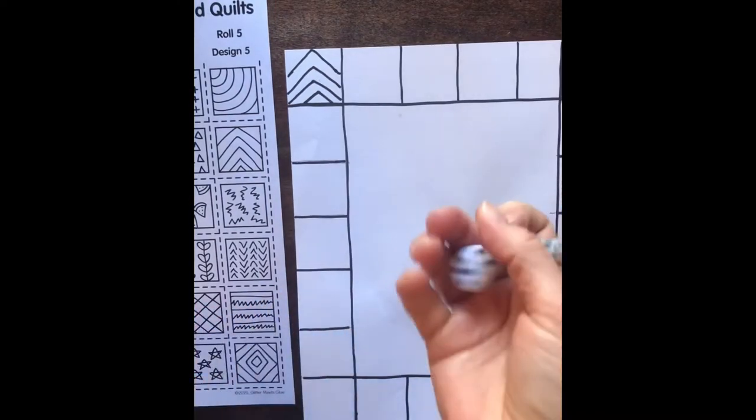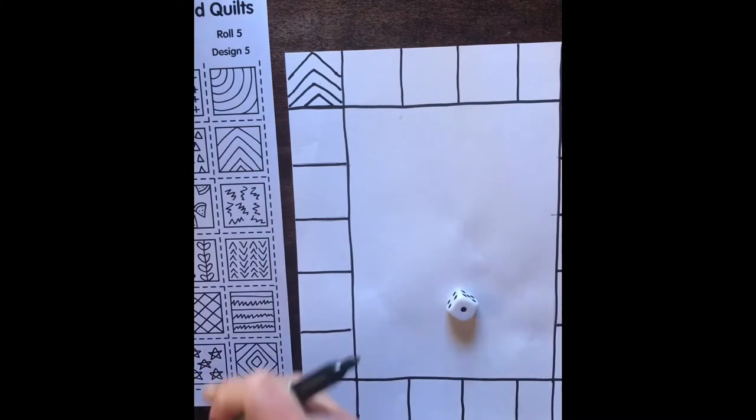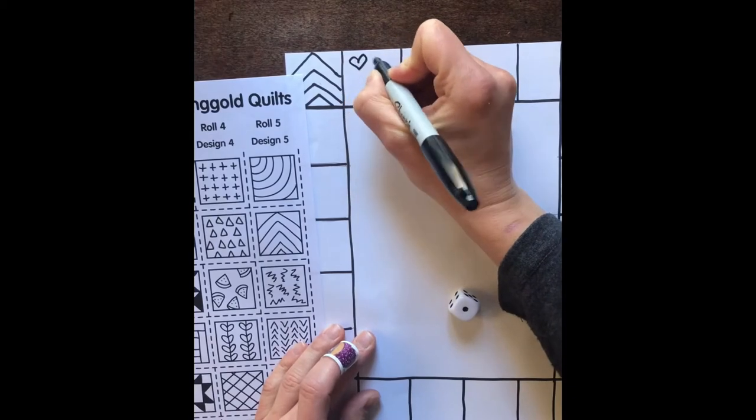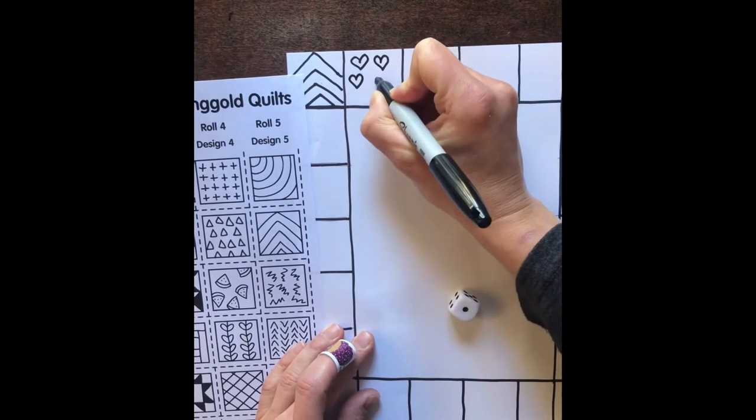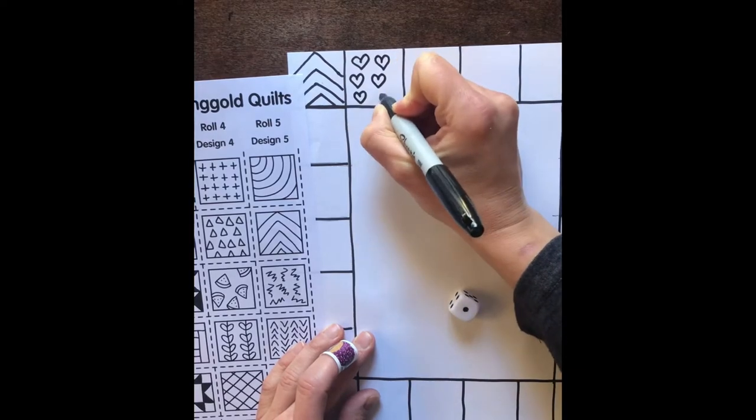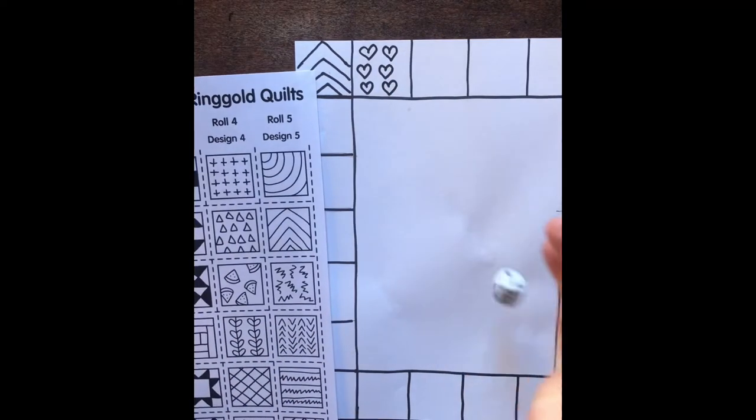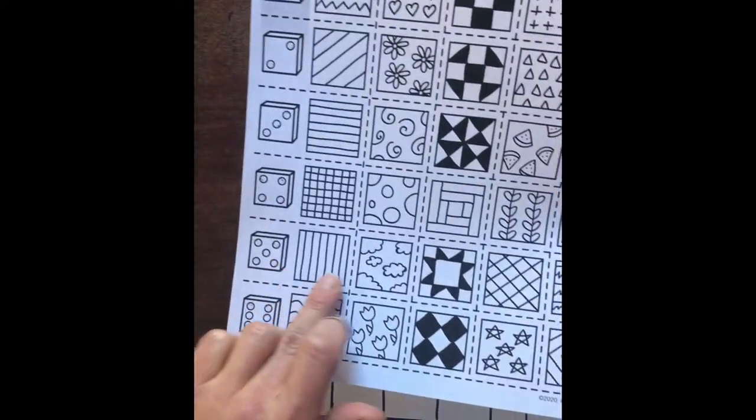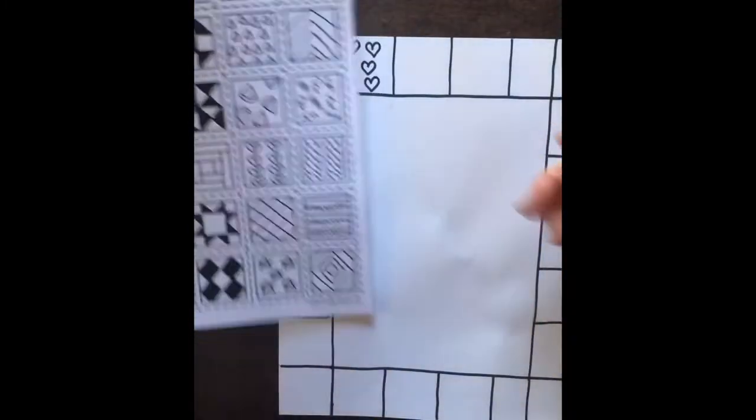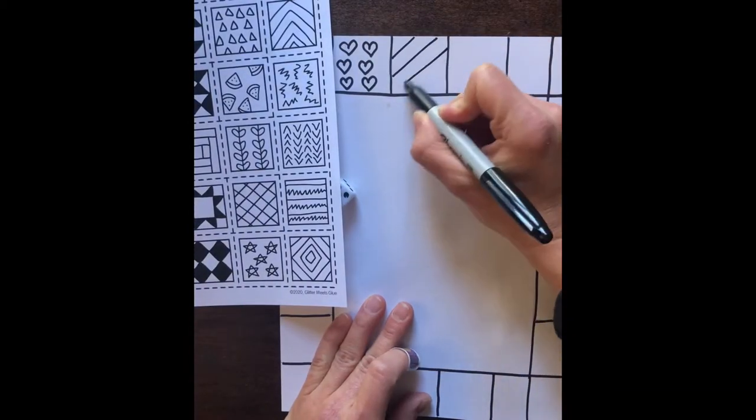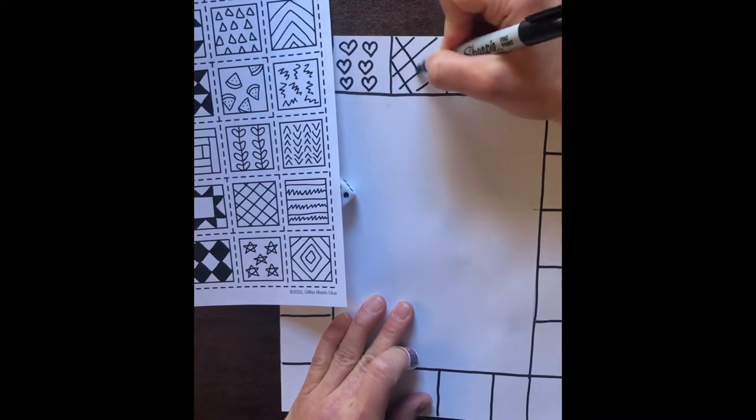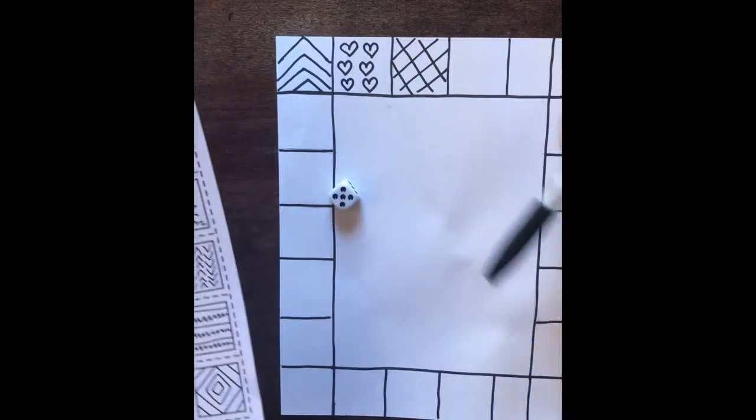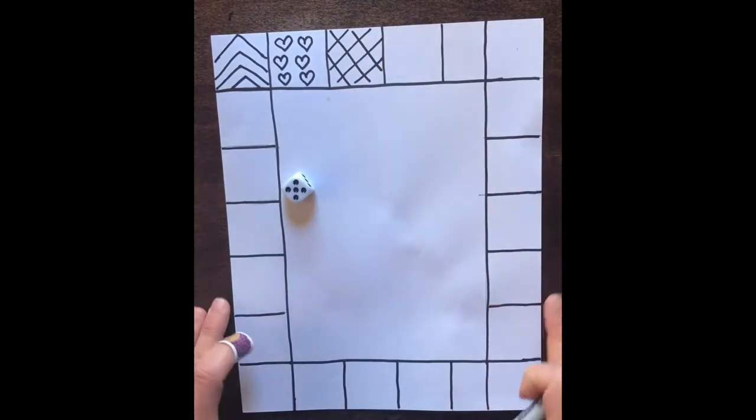Rolling again, this time I got a one. Looking at design one, of course I'm going to select those hearts. Rolling again, design number five right here, and I'm going to pick this one with a diagonal. And I'm going to keep going using this worksheet to come up with different lines and shapes and patterns around the quilt.